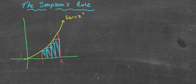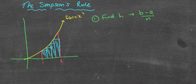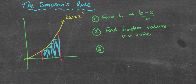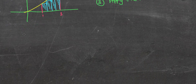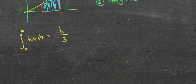For our purposes, the first two steps are exactly the same. Step one is to find the h value — we do that with b minus a over n. Step two is to find the function values via a table. Step three — the only different step — is to apply the rule. The rule starts similarly: the integral from a to b of f(x) dx, but instead of h over 2, Simpson's rule uses h over 3.